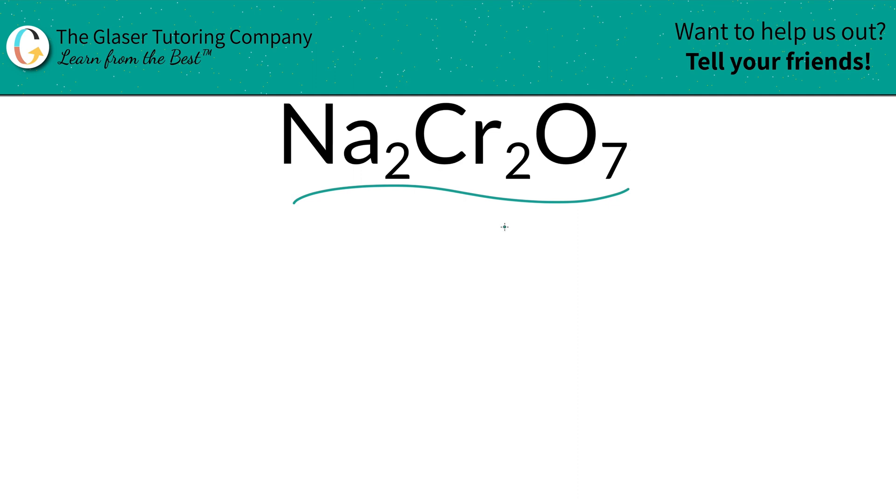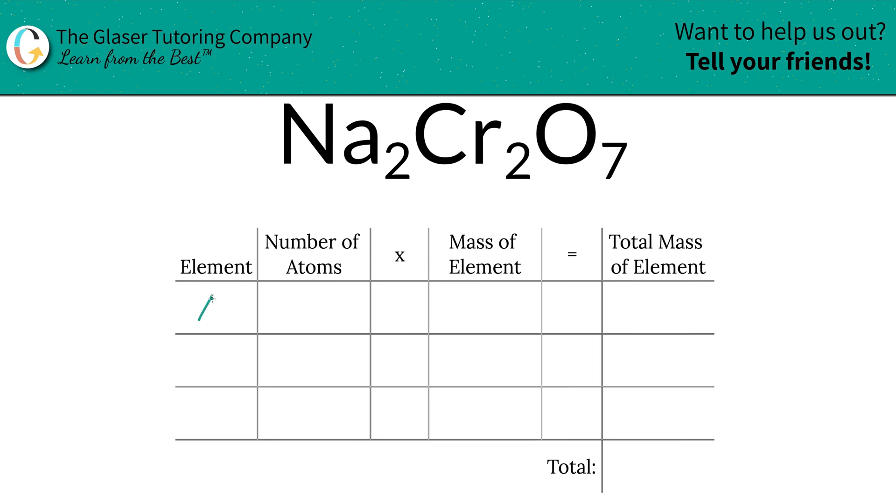I've created a little table to help us out. Take a look. So the first step is to write the elements we see in the compound. So we have sodium, chromium, and oxygen.